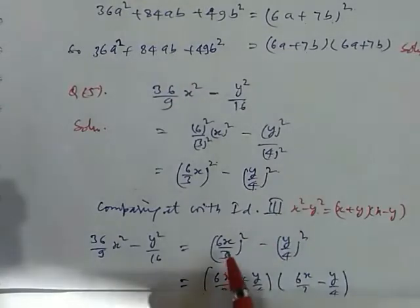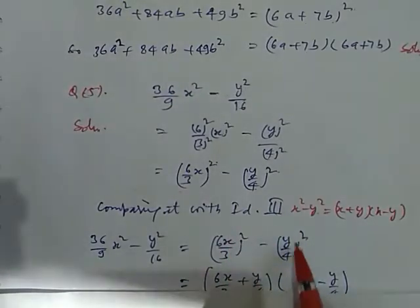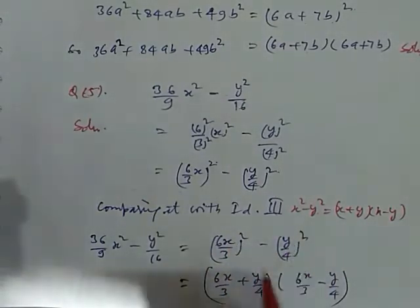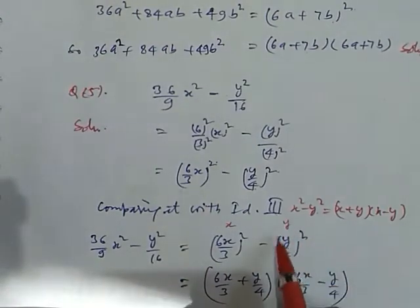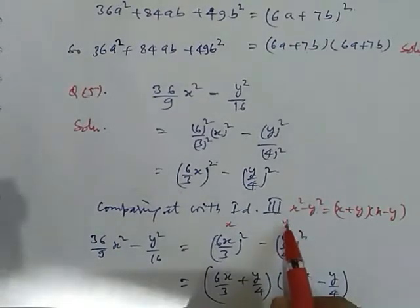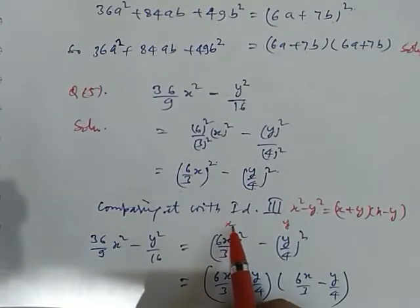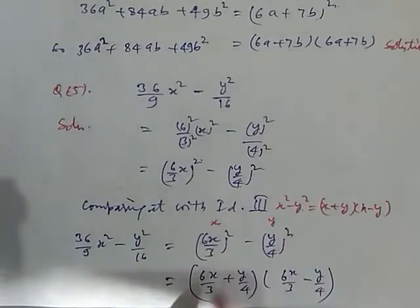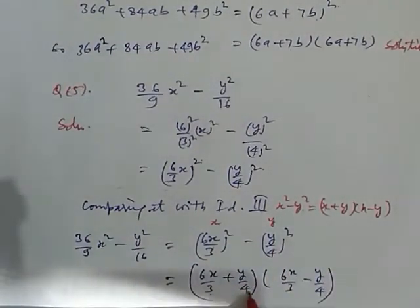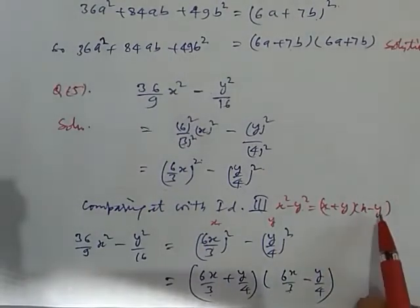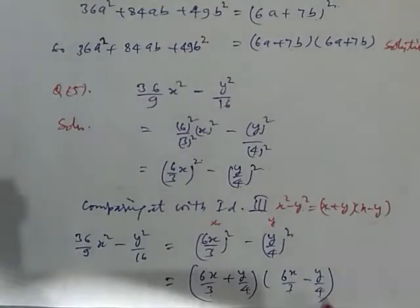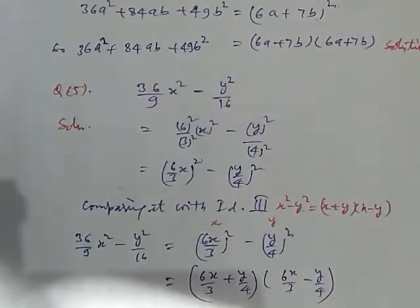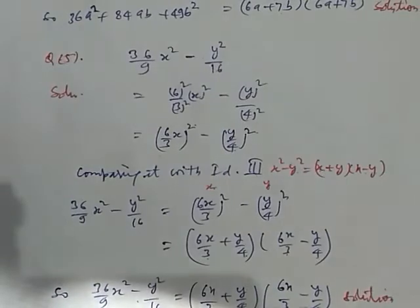We can write down this as x and this as y. So, on the place of x and y, we just put these terms. Consider this complete whole term as x and this complete whole term as y. So, x is 6x by 3, y is y by 4. One time here plus and the other time here minus. So, this is our factor. The factorization of this is: 6x by 3 plus y by 4 into 6x by 3 minus y by 4.